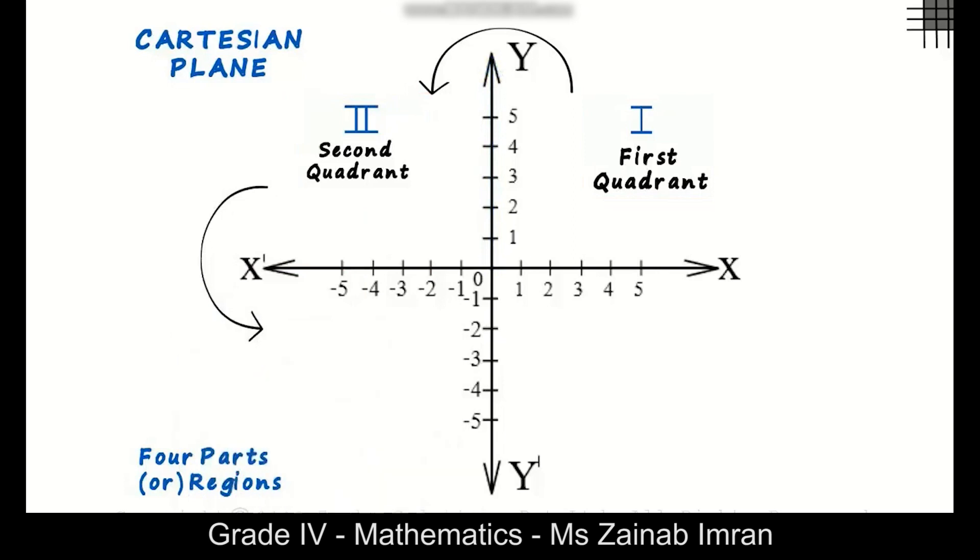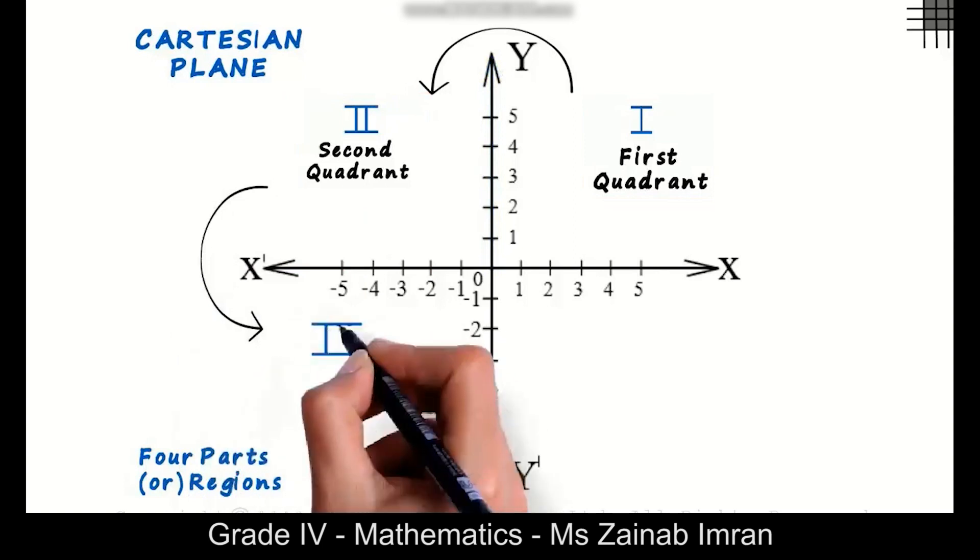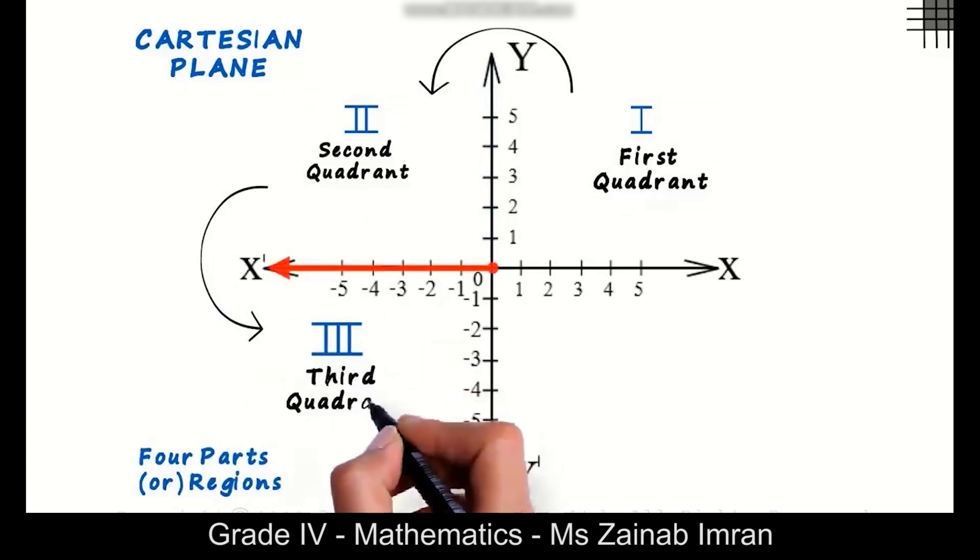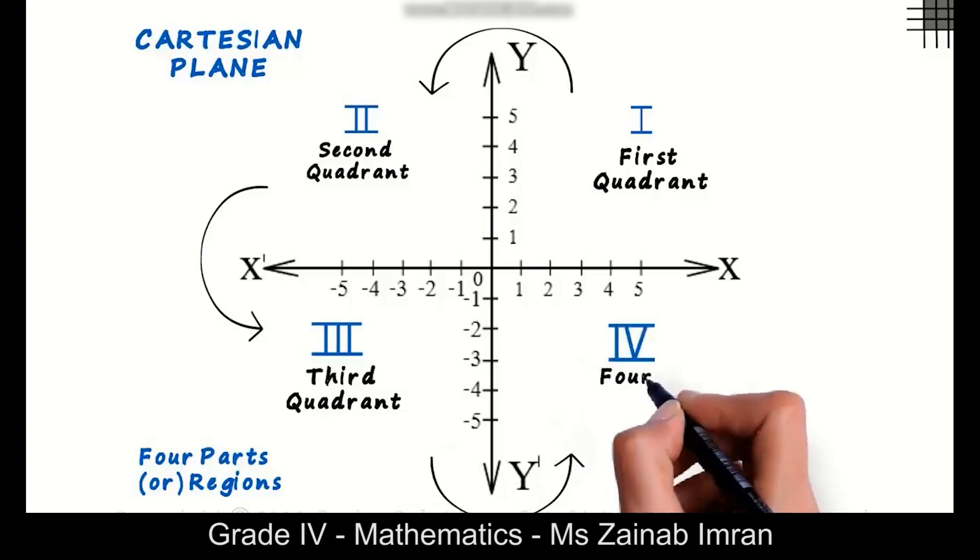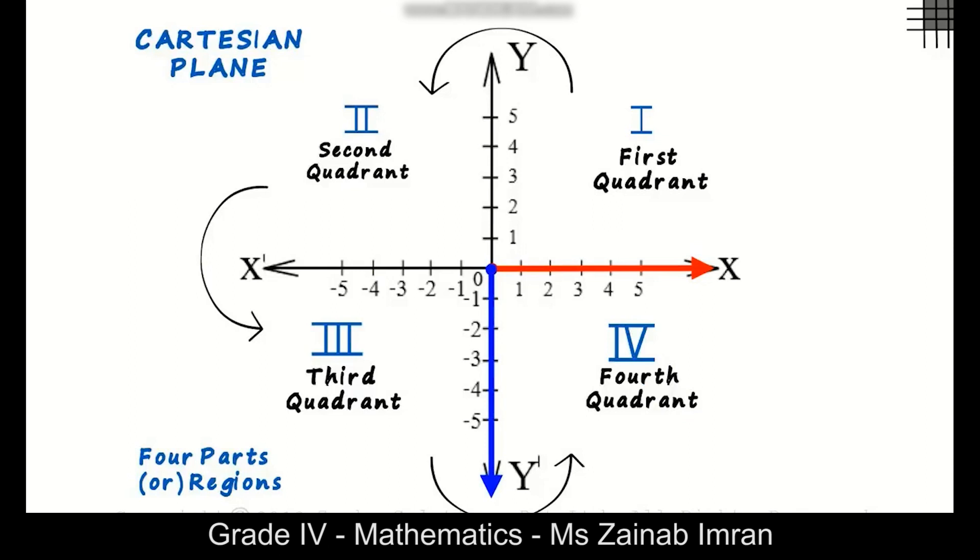Moving in the anti-clockwise direction, this is the third quadrant, where the x as well as the y values are negative. This region is the fourth quadrant. The x-coordinates are positive and the y-coordinates are negative.